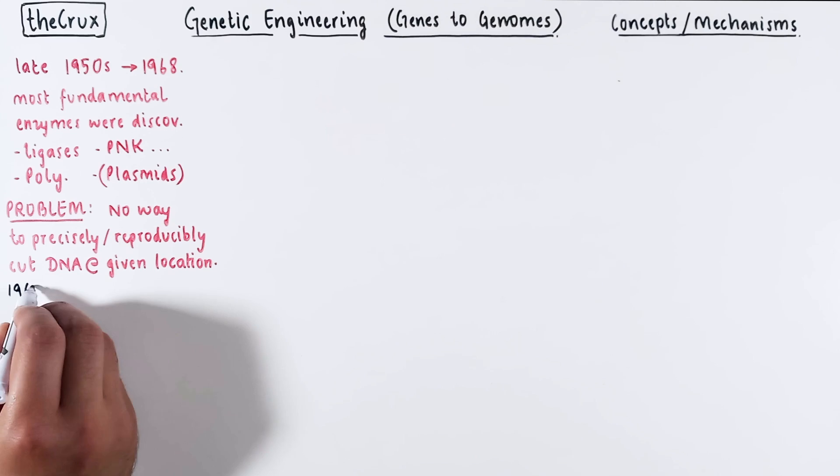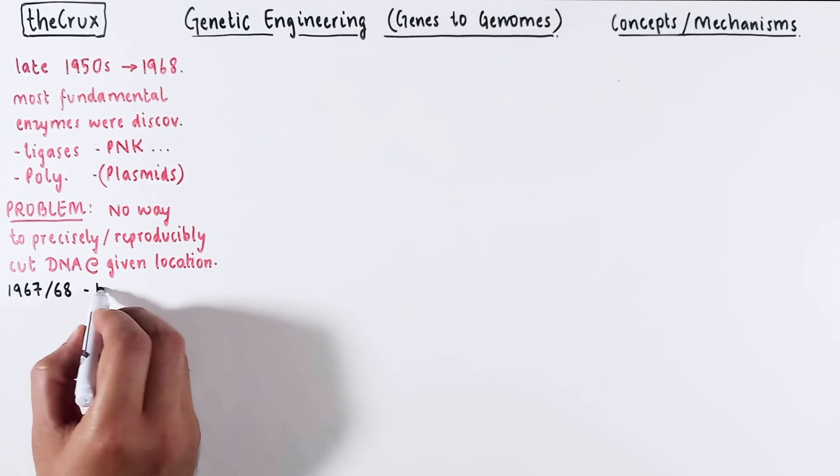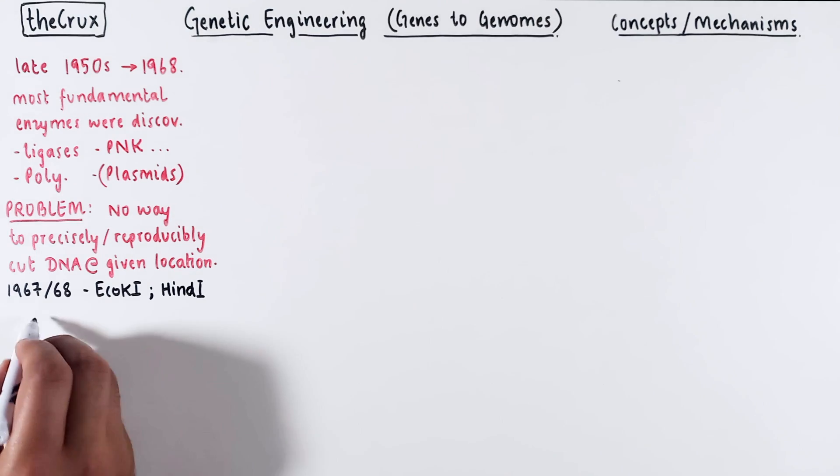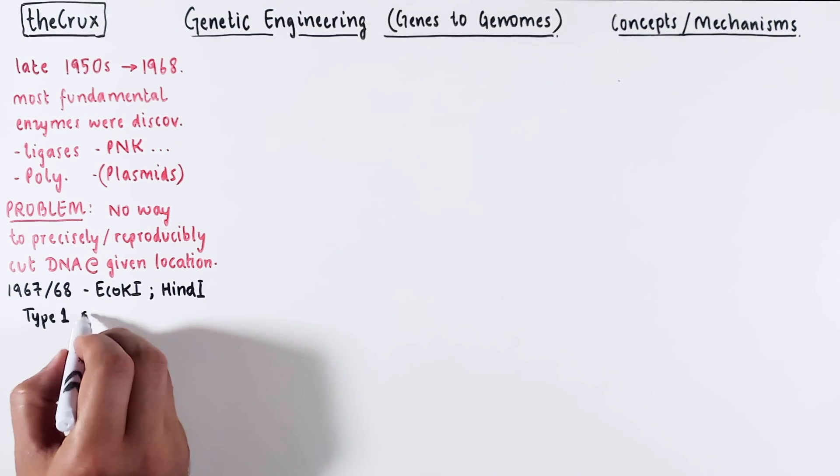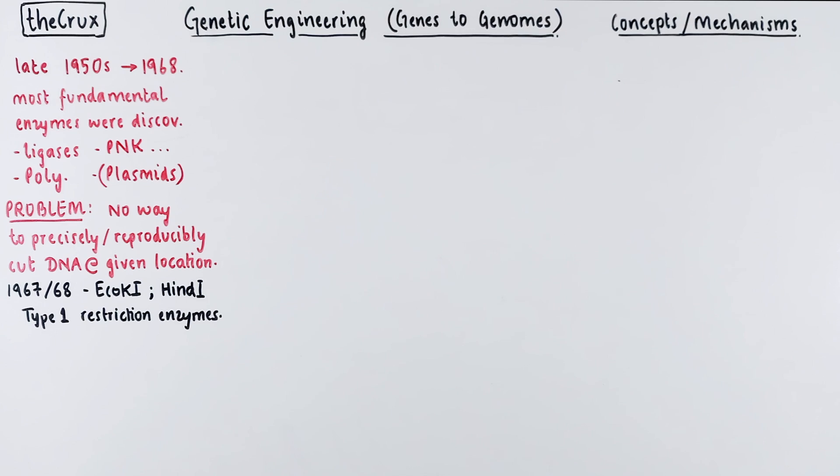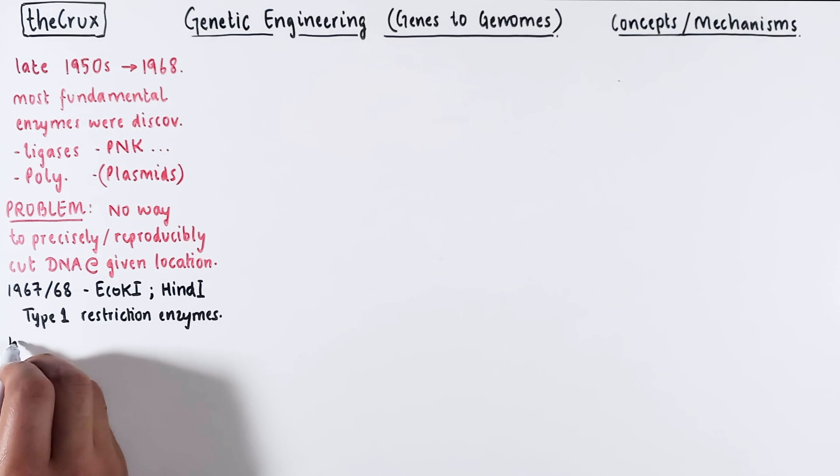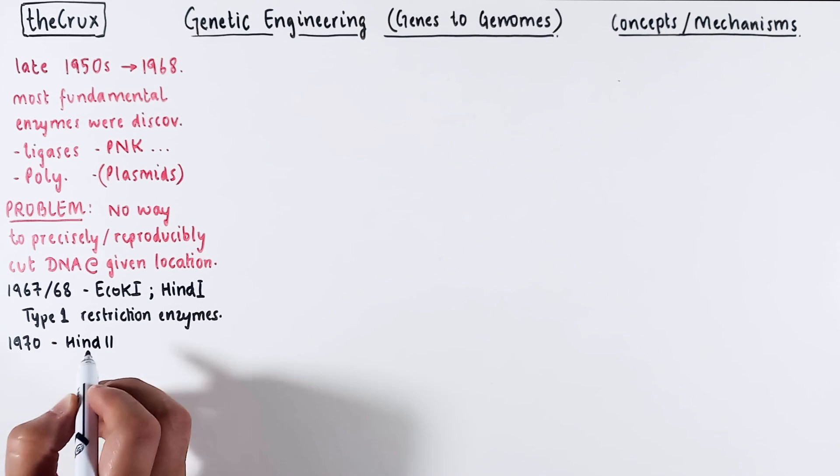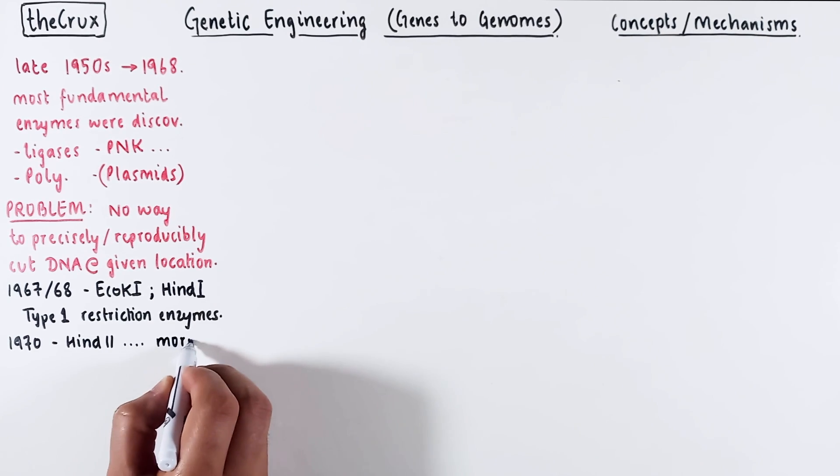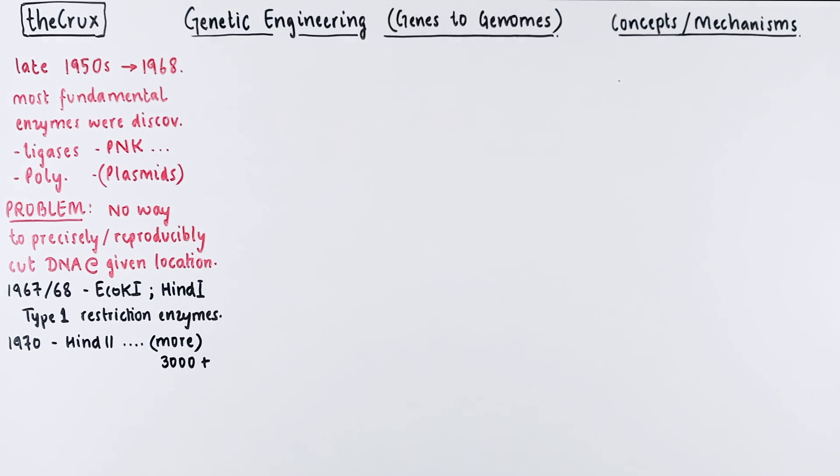This changed in late 1967 with the discovery of EcoK1 and Hind1, the first two restriction enzymes. These two enzymes were practically useless, but subsequent research led to the discovery of more promising candidates. Hind2 emerged as one of the earliest, genuinely useful restriction enzymes. This breakthrough paved the way for identification of numerous valuable restriction enzymes, and today we have knowledge of over 3,000 such enzymes.